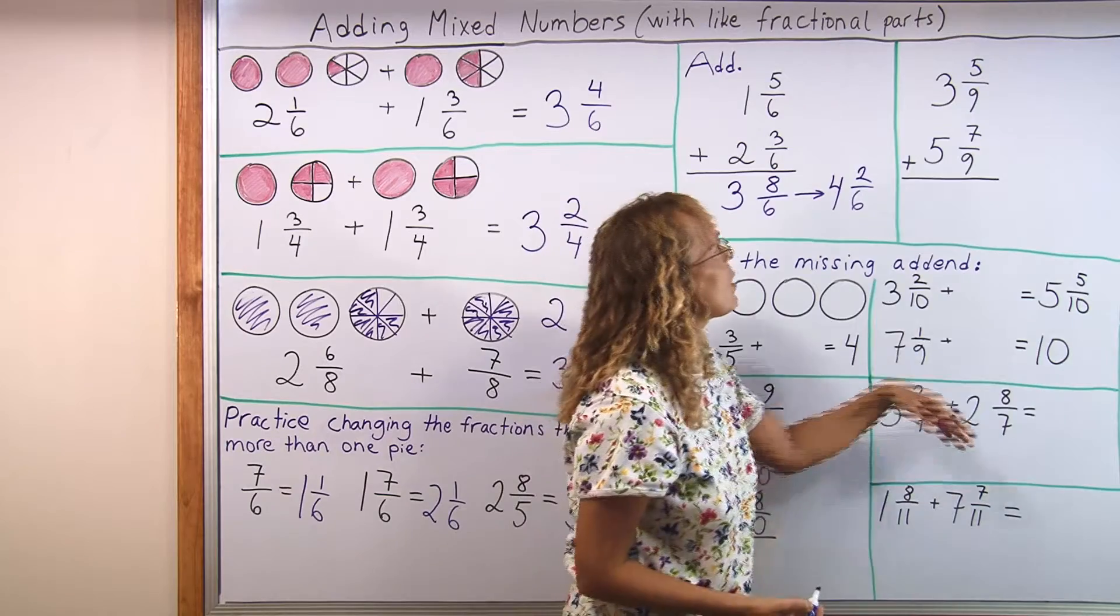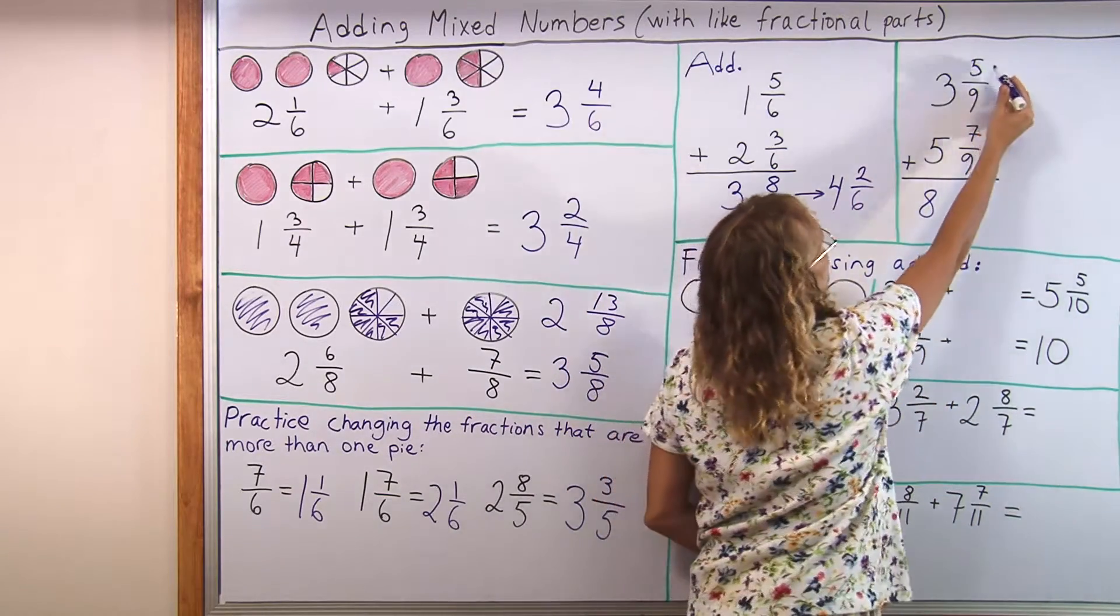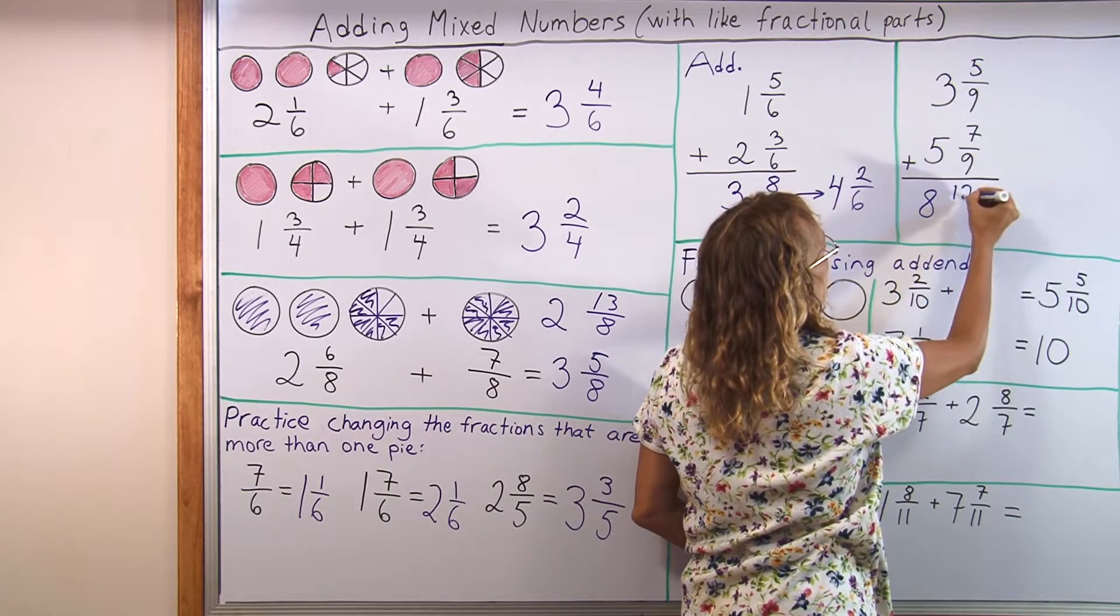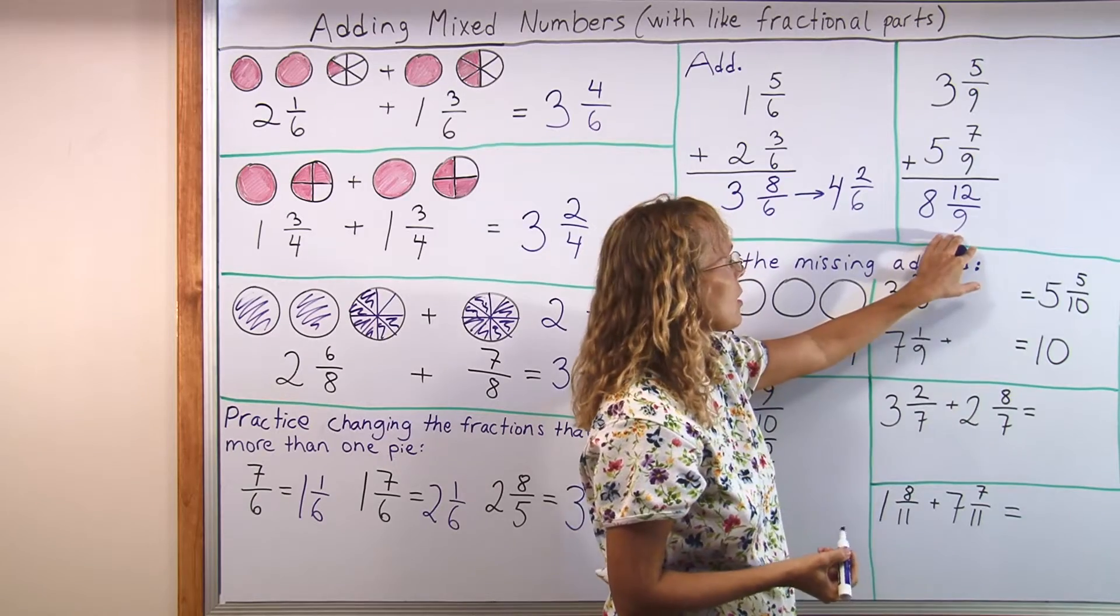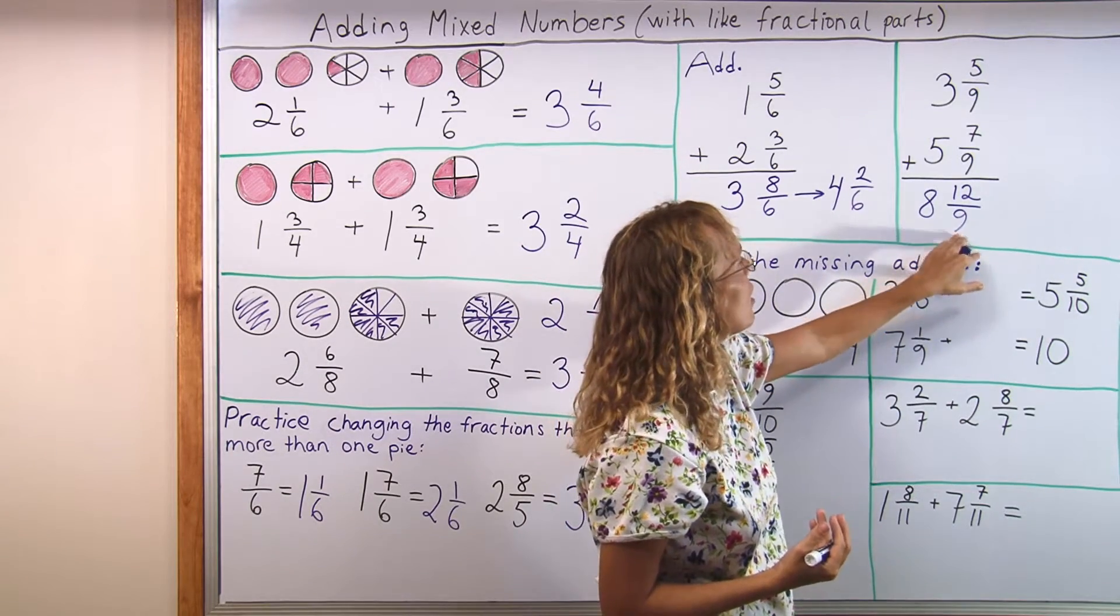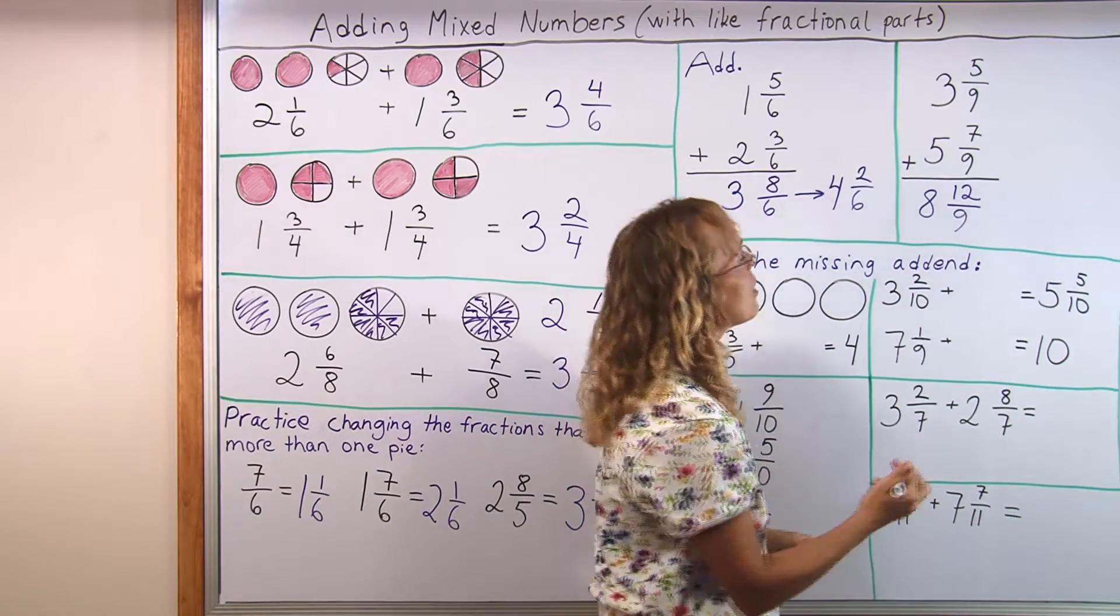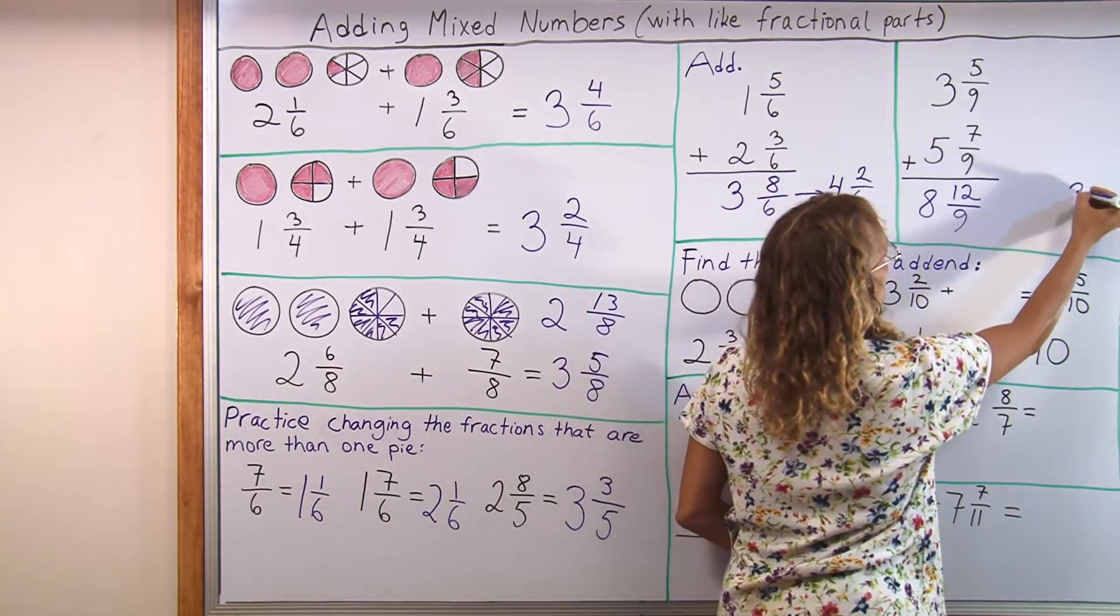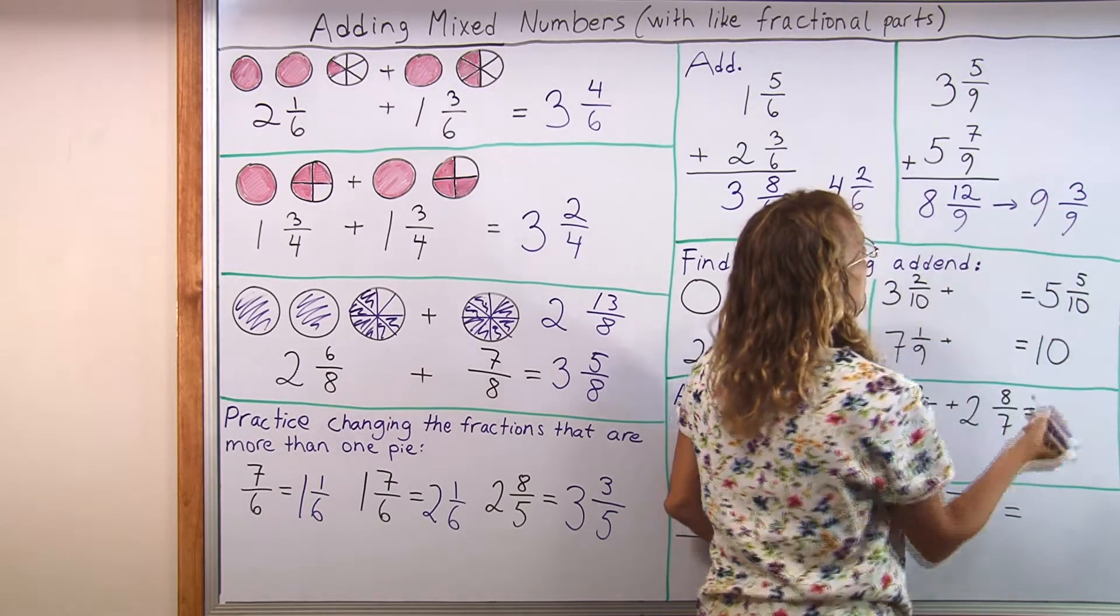Here's another similar example. You can add the whole numbers first and fractional parts. There's 5 and 7, which is 12 ninths. Then we change this. This is an improper fraction, technically speaking. We change it and get 1 whole pie. 9 ninths makes 1 whole pie. And then 3 ninths are left over. So it increases to 9 whole pies.